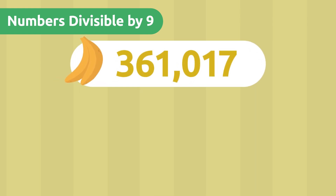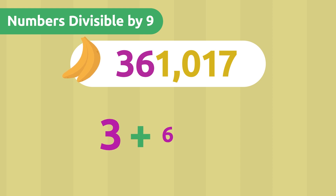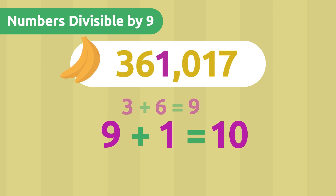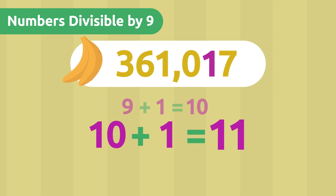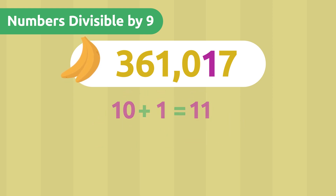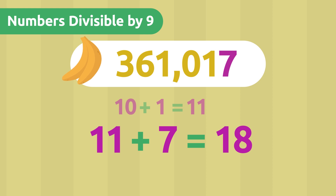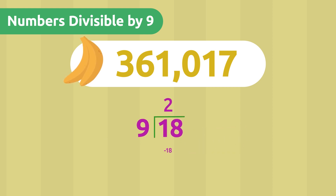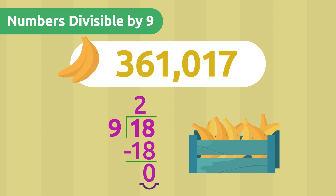Take a look. 3 plus 6 is 9, 9 plus 1 is 10, 10 plus 1 is 11, and 11 plus 7 is 18. Now we'll do the division. Since the remainder is 0, 18 is divisible by 9, and so is the number of bananas. That means we won't have any bananas left over when we put them in the boxes.